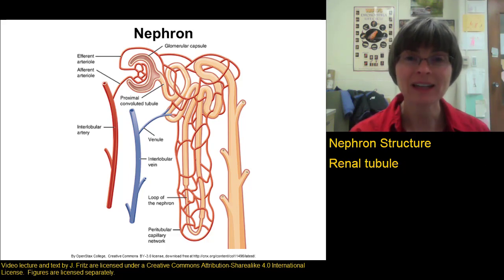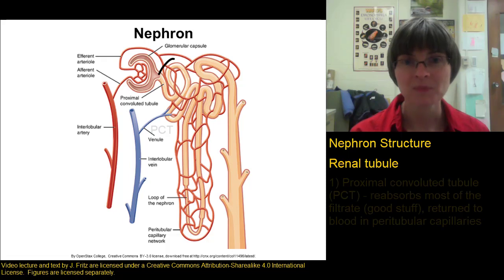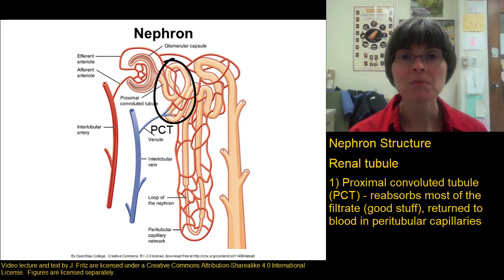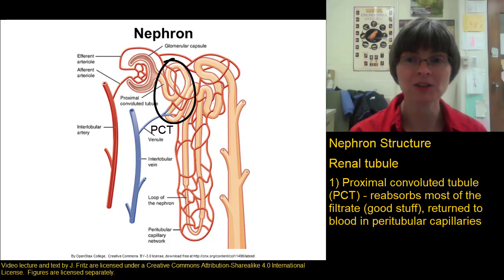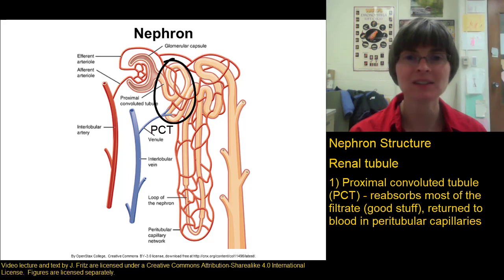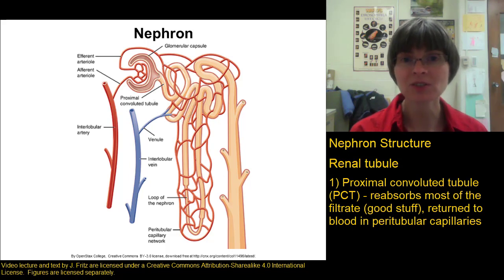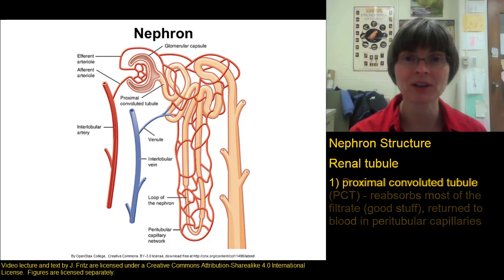The renal tubule is divided into different parts. The first part is called the proximal convoluted tubule, or PCT. This is where most of the filtrate is reabsorbed — where most of the good molecules are going to be taken back: the water, the glucose, the amino acids, sodium, chlorine — a lot of that gets reabsorbed here from the PCT. That's then returned into circulation in the peritubular capillaries.